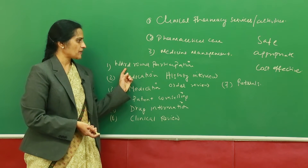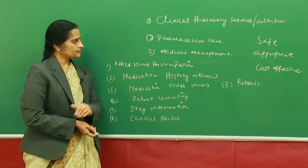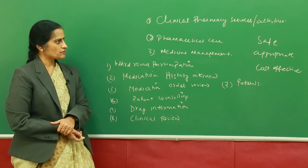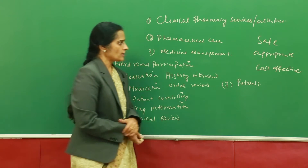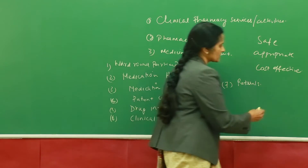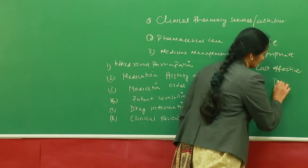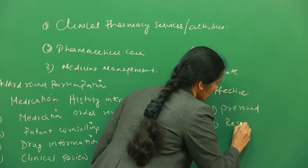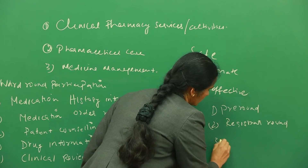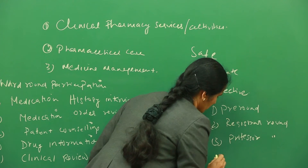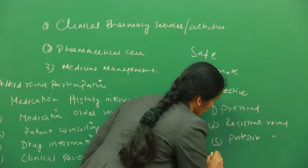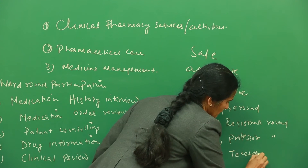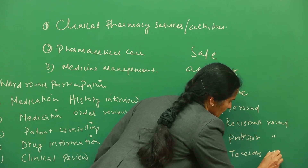In ward round participation, there are different types you can think of. The first is the pre-round, the second is the registrar round, the third is the professor round, and the fourth is the teachers round.